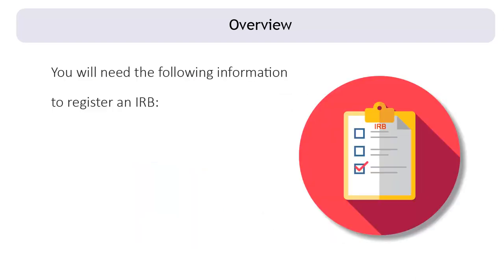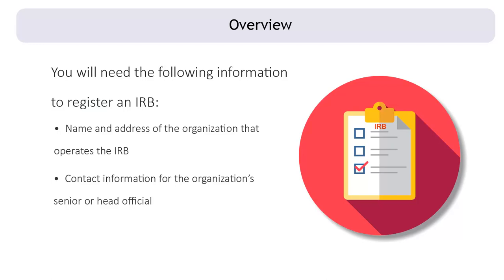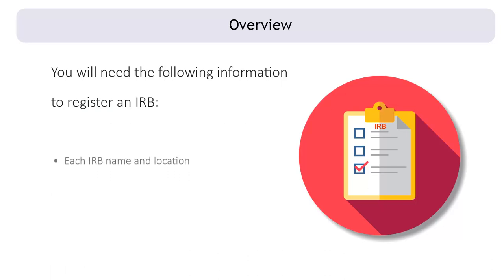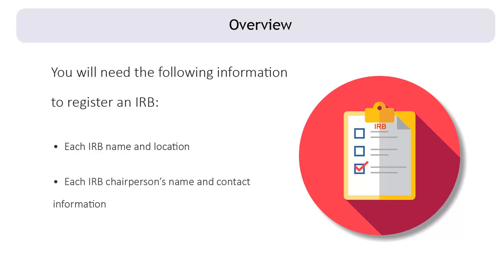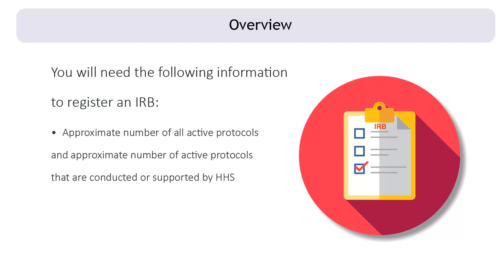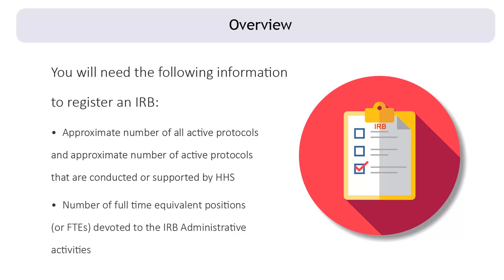You will need the following information to register an IRB: name and address of the organization that operates the IRB; contact information for the organization's senior or head official; the contact person providing the registration information; each IRB name and location; each IRB chairperson's name and contact information; and the approximate number of all active protocols and approximate number of active protocols conducted or supported by HHS.